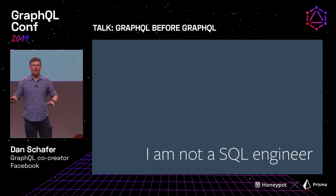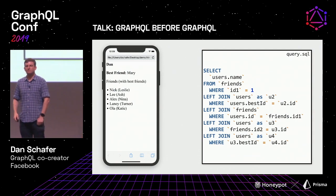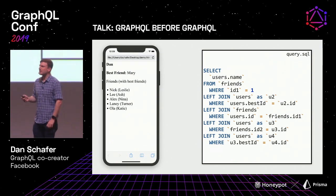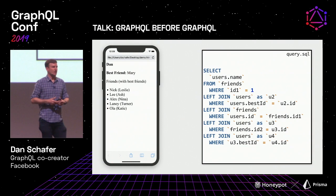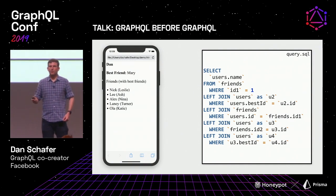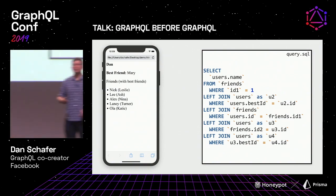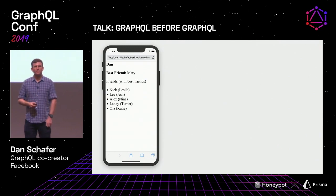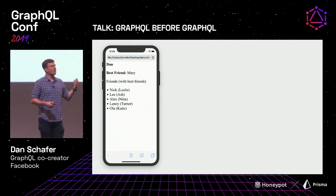That would work, but there are a couple of things that don't quite click. First, those joins assume we can efficiently run them across all this data. If this is all in one SQL database that might work, but as a hypothetical social network grows to billions of users, maybe we're not running one giant SQL database — maybe we're sharding across multiple DBs, and suddenly those joins aren't looking trivial. But there's also a conceptual reason: that sequence of joins isn't how I think about this app.